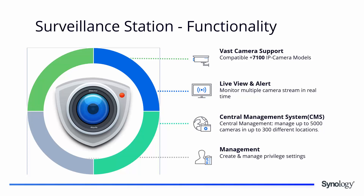Surveillance Station has vast camera support with more than 7,100 IP camera models. To see the full list you can look up the compatibility list at www.synology.com. Furthermore, the app comes with live view and alert support, allowing you to view up to 64 camera channels at the same time.